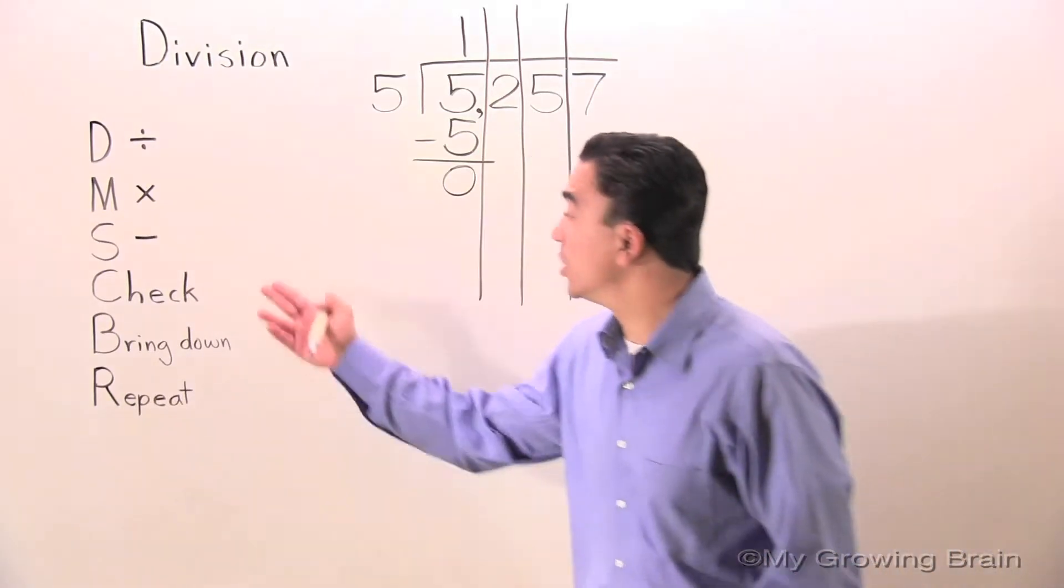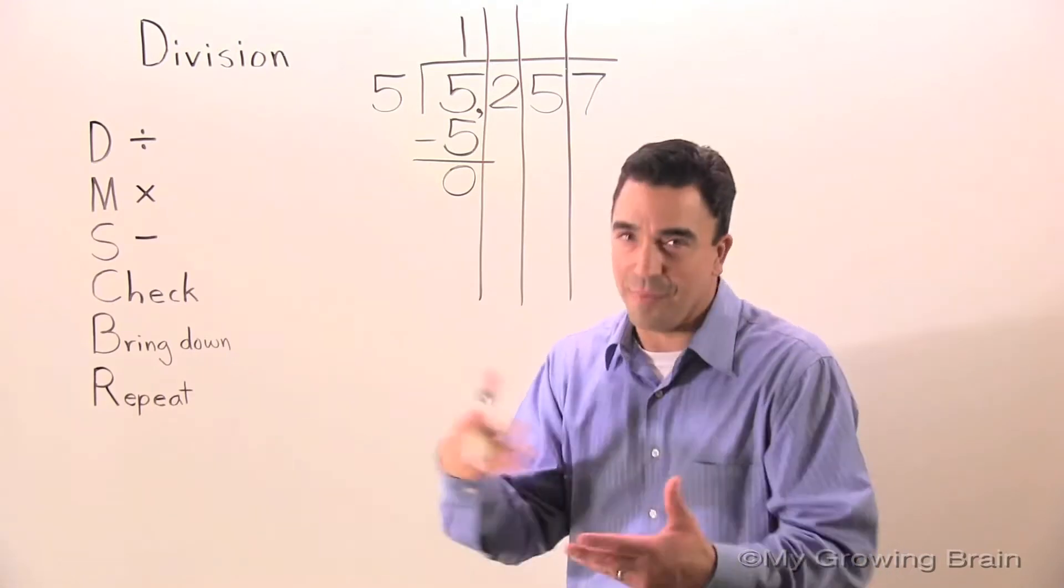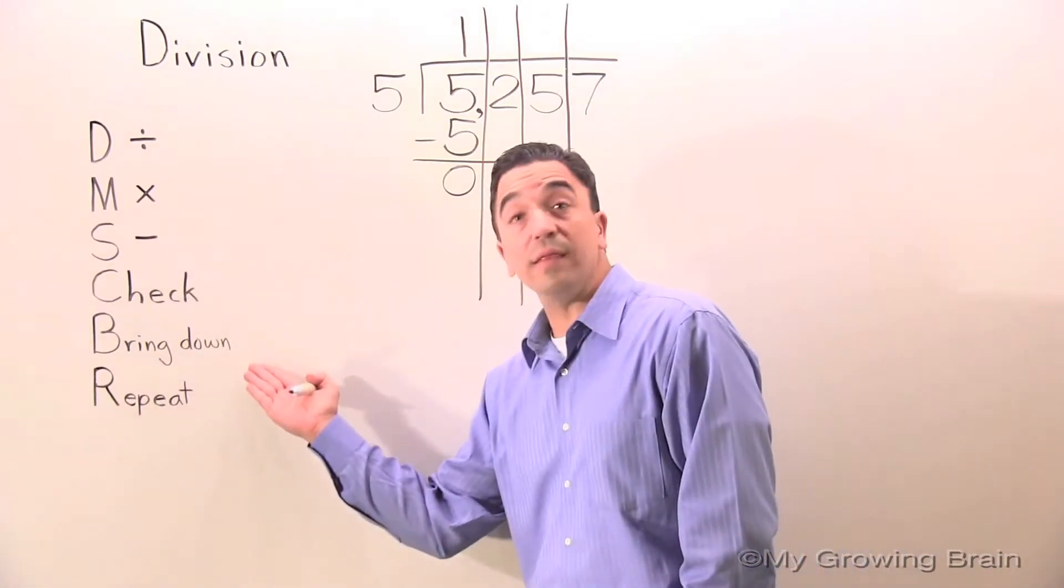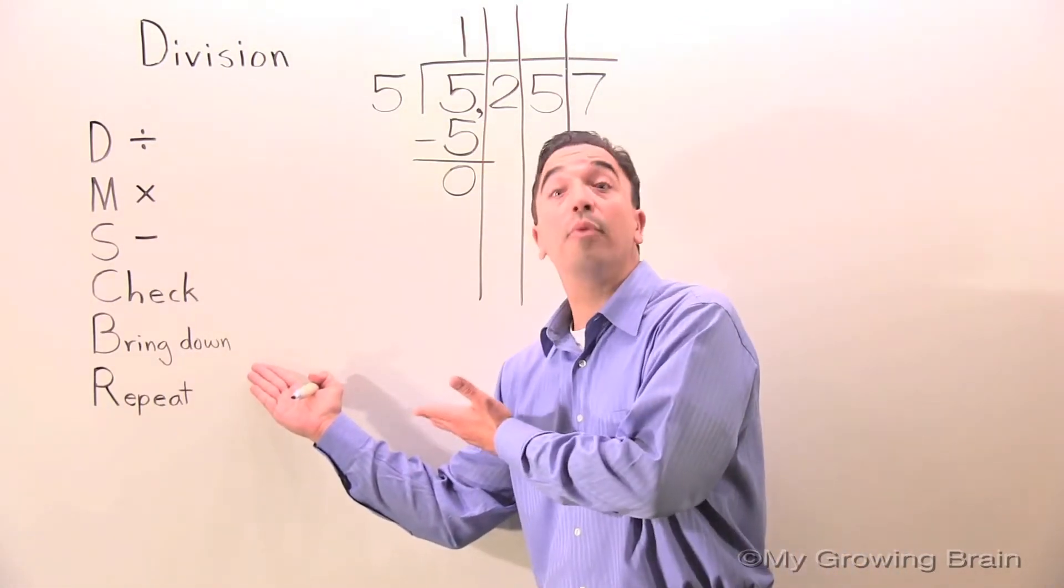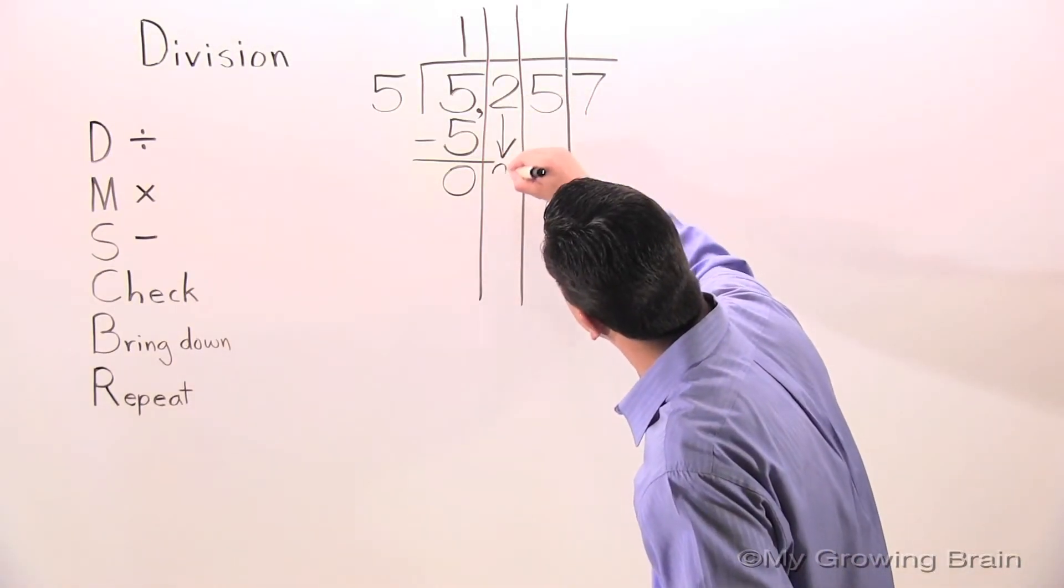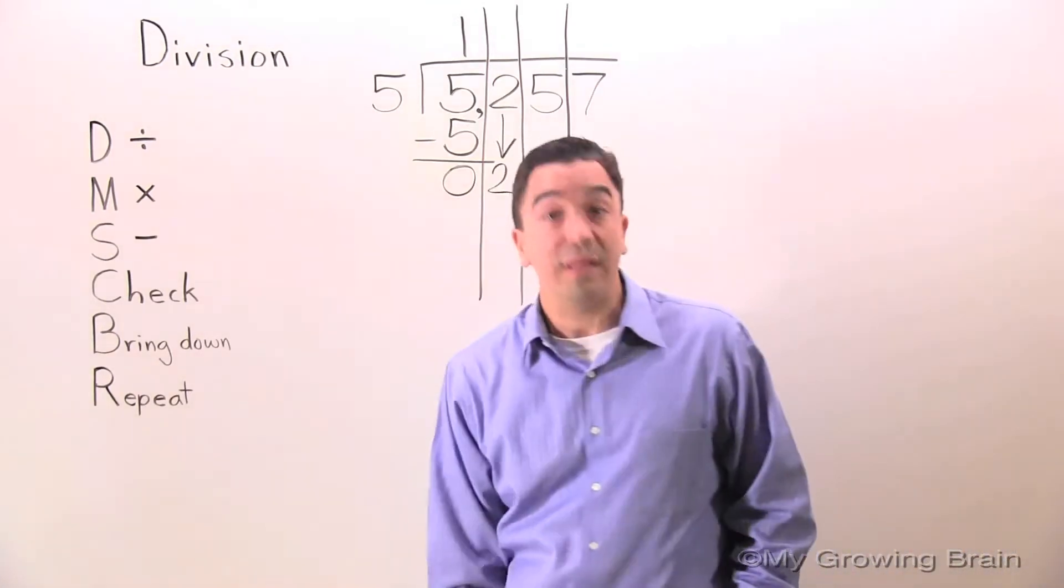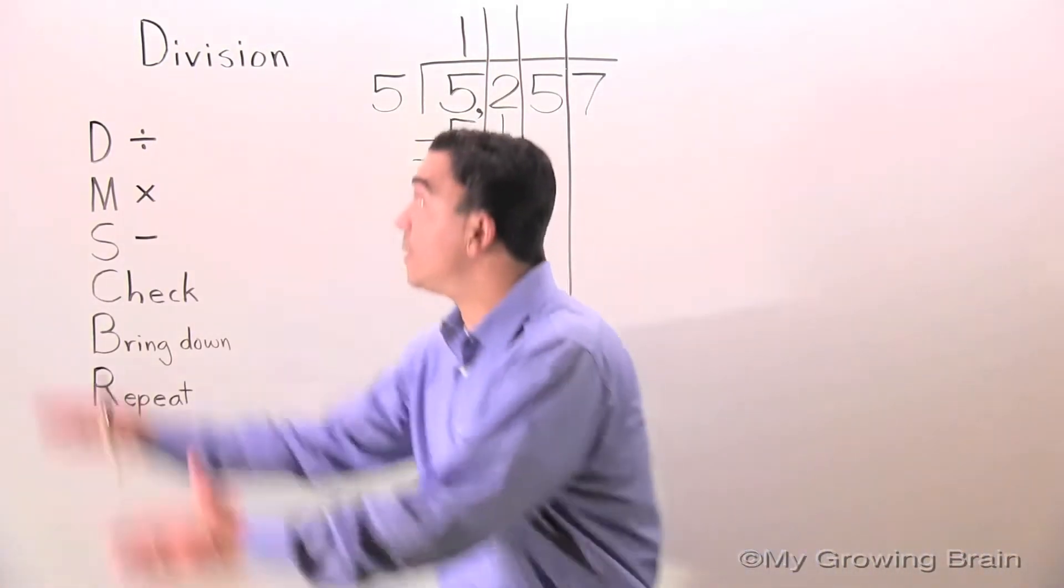Next step, check: 0 is less than 5. Keep on going. Next step, bring down. Next step, repeat the process, all the way back to the top.